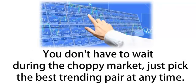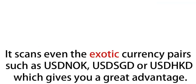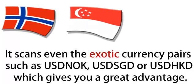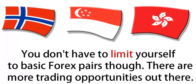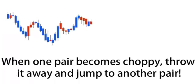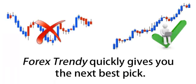You don't have to wait during the choppy market — just pick the best trending pair at any time. It scans even the exotic currency pairs such as the Norwegian Krone, the Singapore Dollar or the Hong Kong Dollar, which gives you a great advantage. You don't have to limit yourself to basic Forex pairs. There are more trading opportunities out there. When one becomes choppy, throw it away and jump to another pair. Forex Trendy quickly gives you the next best pick.